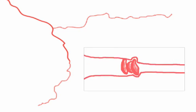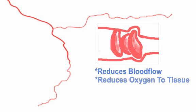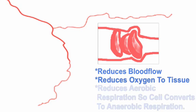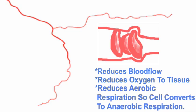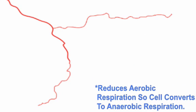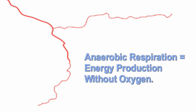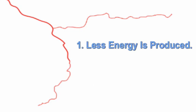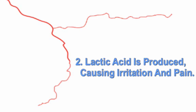When the oval-shaped red blood cells change to their sickle shape, they get stuck. This reduces blood flow, which reduces oxygen to the tissue. This reduces aerobic respiration, so your cell converts to anaerobic respiration — think of anaerobic respiration as energy production without oxygen. Two things happen: less energy is produced, so you're tired, and one of the waste products is lactic acid, which irritates the surrounding tissue, causing pain.